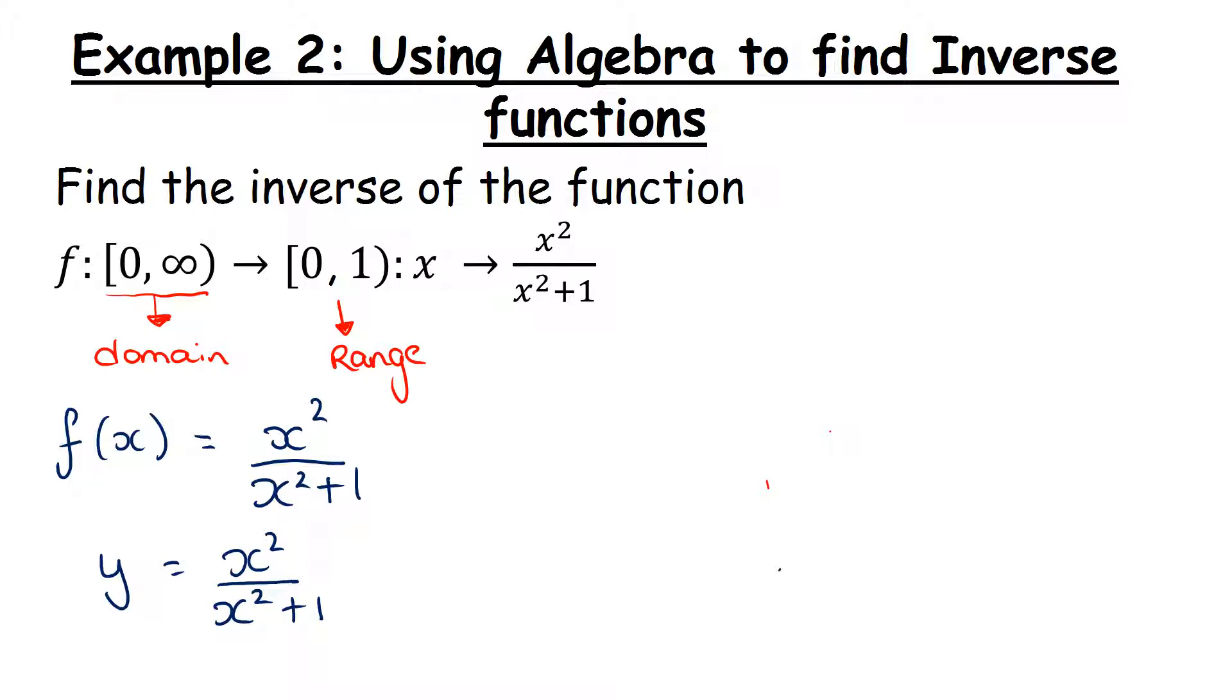So y equals x squared over x squared plus 1. Now let's rearrange. To get rid of the fraction, we're going to multiply both sides by x squared plus 1. These pieces will cancel, leaving us with x squared plus 1 by y equals x squared. We'll multiply out the bracket: x squared y plus y equals x squared. We're trying to get x on its own, so we'll bring our x's together: x squared y minus x squared equals minus y.